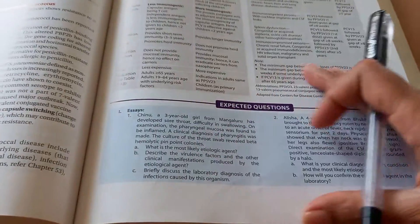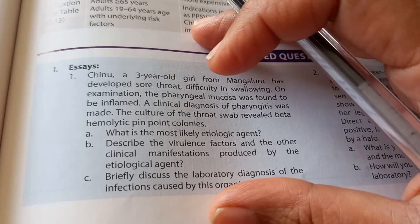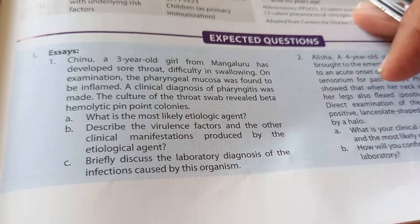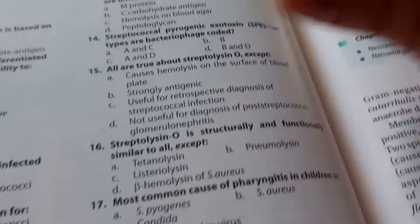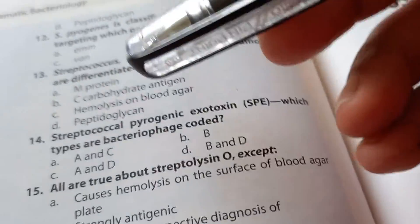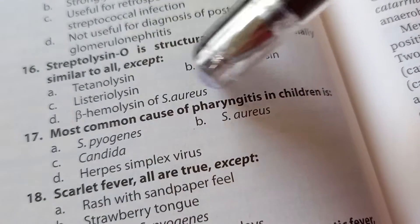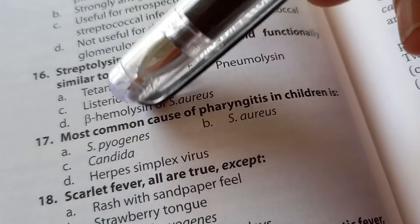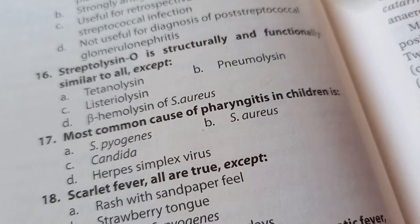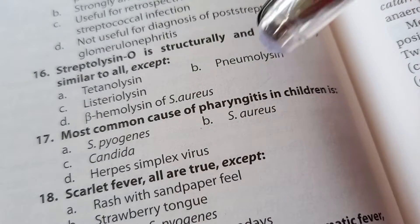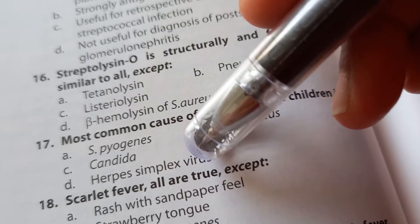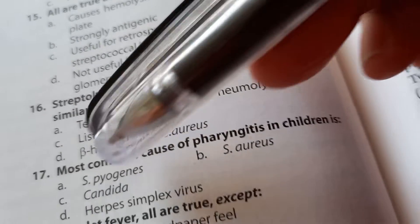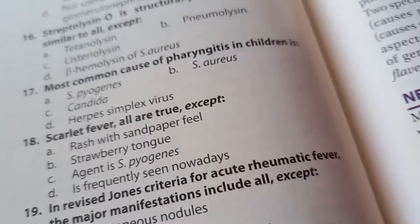There are so many questions here and they are also giving case studies. Let's pick up an MCQ randomly and try our luck. Okay, try this one: most common cause of pharyngitis in children is — I'm thinking Streptococcus, isn't it? Streptococcus throat. Let's check the answer — yes, 100% right: Streptococcus pyogenes.